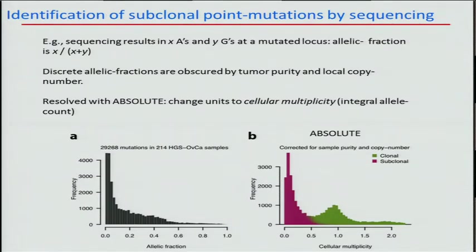We think the distribution we're seeing is mostly consistent with neutral evolution, unlike the earlier AML data that had discrete subclones at high multiplicities or allelic fractions.